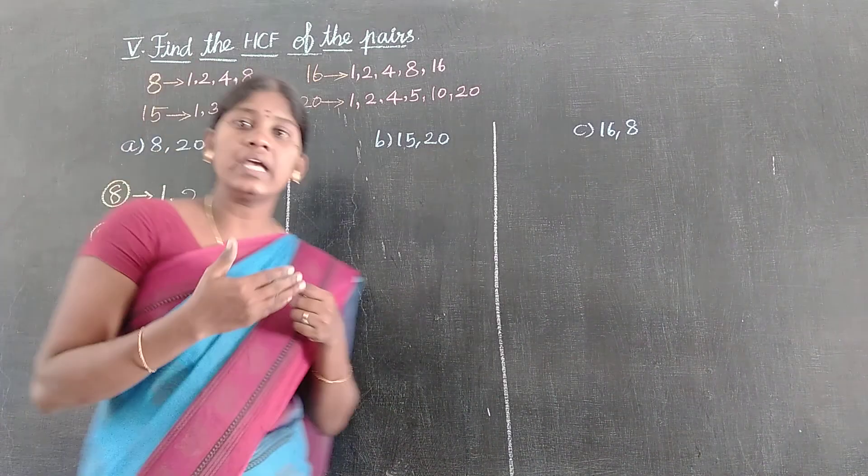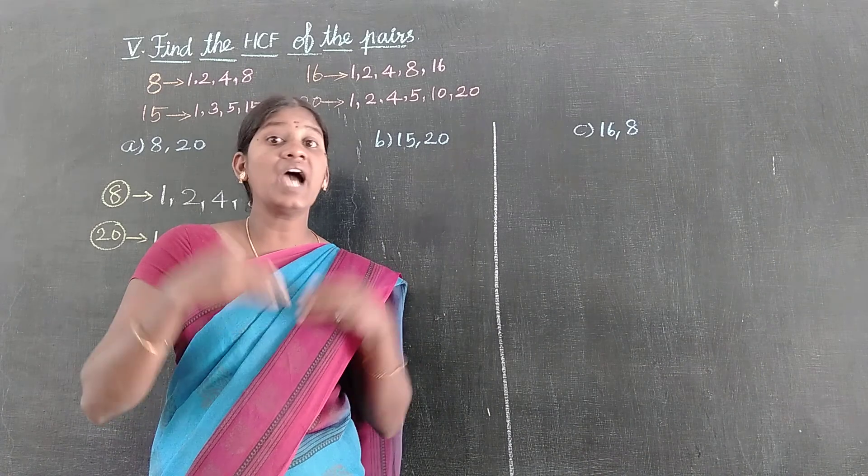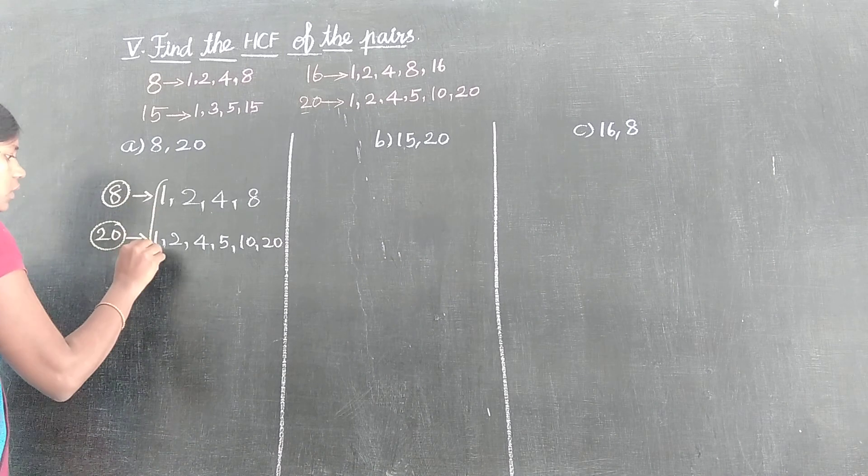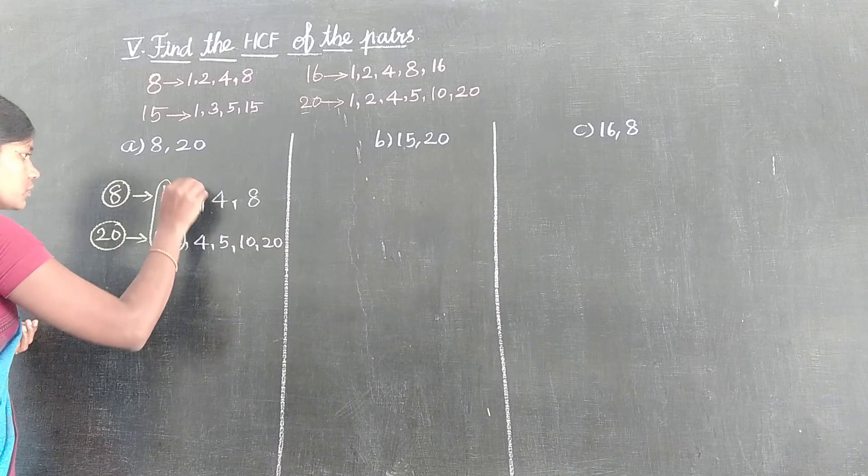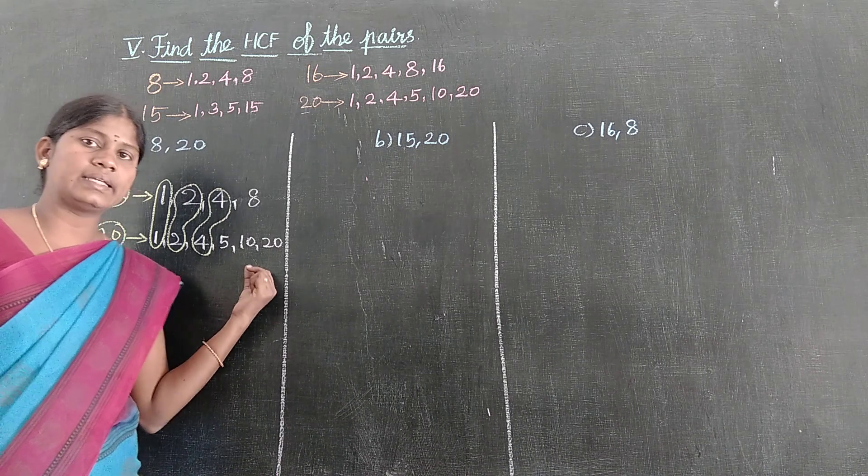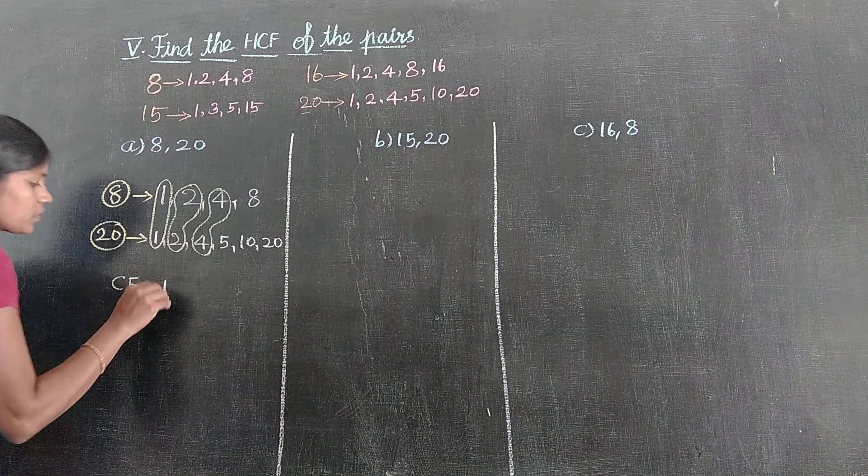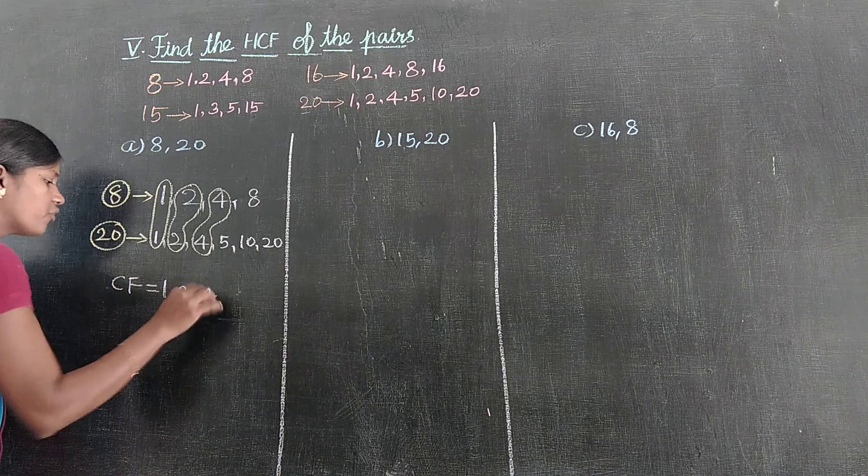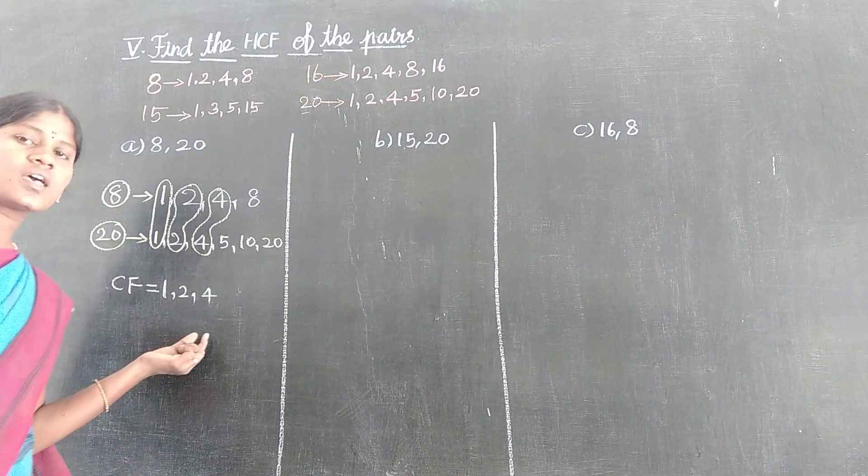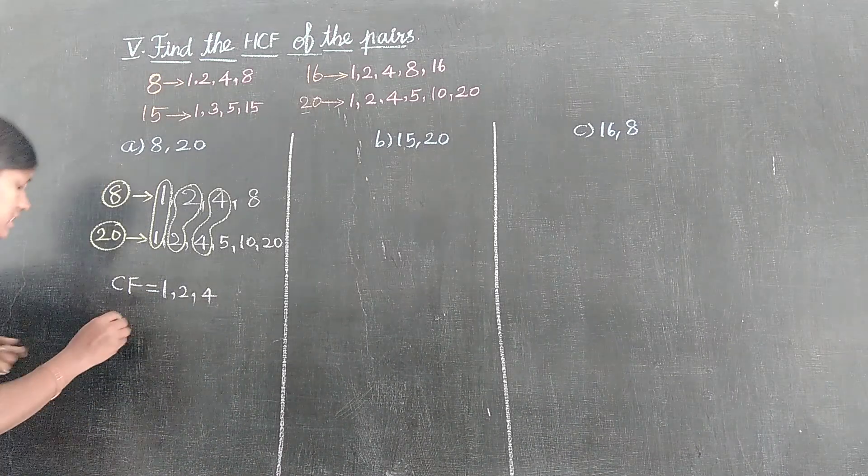Now what happens is the common factors? The common factor is the highest. 1 is the common factor, 2, 4. Where is the common one? Common factors: 1, 2, 4. CF, common factors means CF: 1, 2, 4. And next, HCF is 4 because 4 is the highest number in CF. Common factors, the highest number in CF. So HCF equals 4.